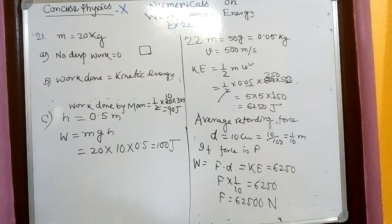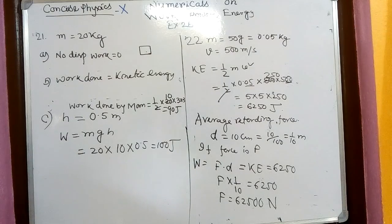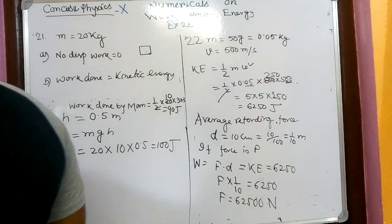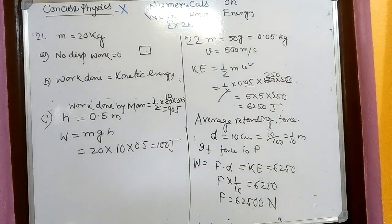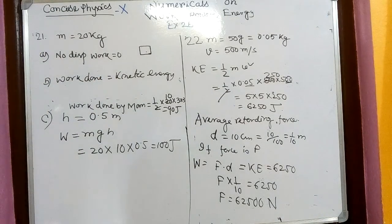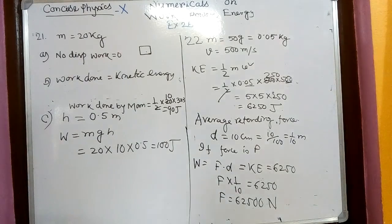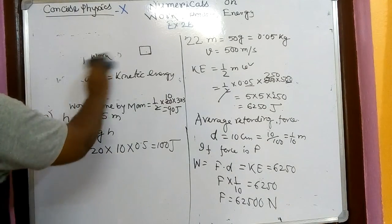Now I will go to the last part of work, power, and energy — that is the conservation of energy, Exercise 2C. Very easy ones. We will do two numericals: question number 3 and question number 5. Rest of the numericals I expect you can do by your own; if not, let me know.